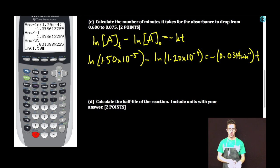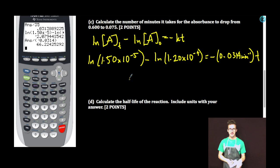Calculator. Natural log, 1.50 second e, negative five, close parentheses, minus natural log, 1.20 second e, negative four, close parentheses. Divided by negative 0.0314. It's going to take us 66.2 minutes to take our concentration of substance X to go from 1.20 times 10 to the minus 4 to 1.5 times 10 to the minus 5.